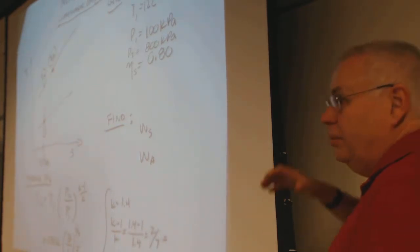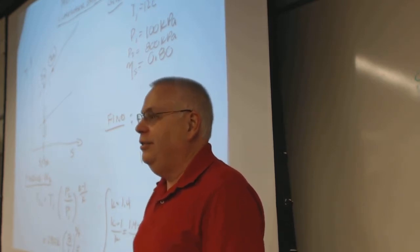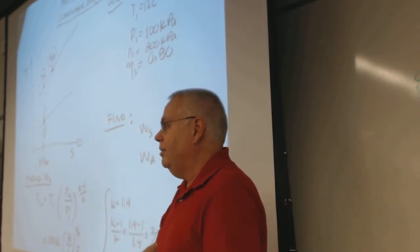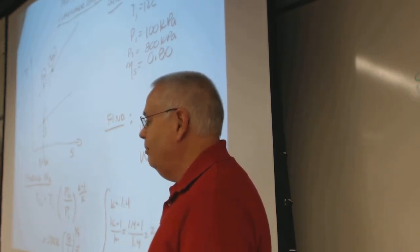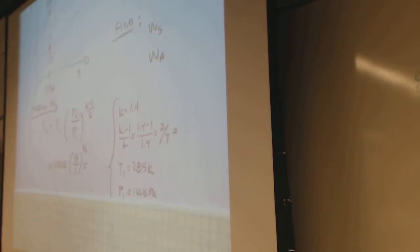I got 285 Kelvin times (8/1) to the (k-1)/k exponent, giving a new temperature. When you compress something, it gets hot — you notice this if you take a bicycle pump and try to pump up your car tire. The bottom of the bicycle pump where the compression is gets too hot to touch if you do it long enough. The result is 516.3 K.